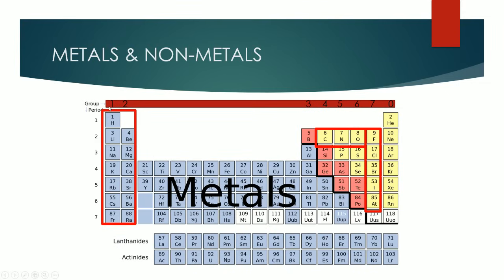The groups are important because they tell you how many outer electrons there are in the atoms within that group. So for example, in group 1, all of these elements have one electron in its outer shell. All the atoms within group 7 have 7 electrons in its outer shell, and this is important because it tells you what an atom needs to do in order to gain a full outer shell of electrons — that's the goal of every single atom. So, for example, fluorine is in group 7, so it has 7 electrons in its outer shell, meaning it just needs one extra electron to make a full outer shell. It would rather gain one electron than to lose 7, because it's easier that way.